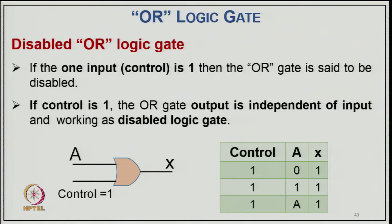The disabled OR logic gate: if one control input is 1, the OR gate is said to be disabled. When control input is 1, the OR gate output is independent of the input and always outputs 1. Whether A is 0 or 1, the output is always 1. The output does not depend on input A because the control has fixed the output at 1.